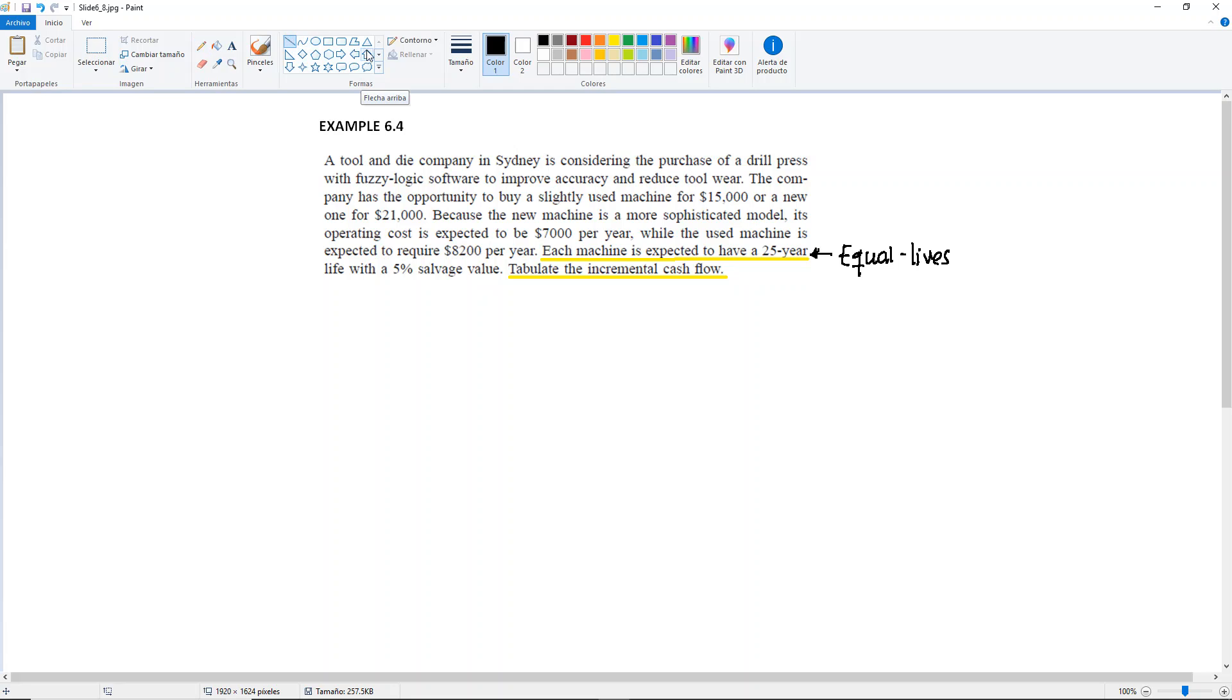I recommend that you draw the diagrams for both of them. So I'm going to have one diagram here and another one over here. This is the first one, we have a used press, the slightly used machine. Let me label this one as the used press.